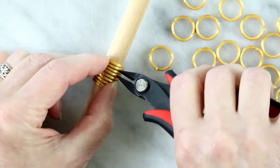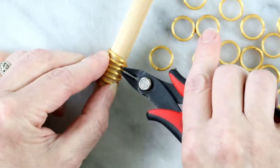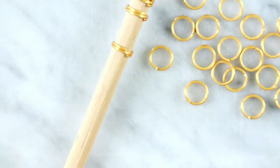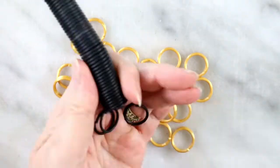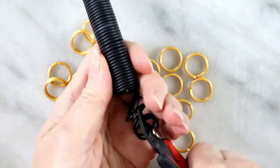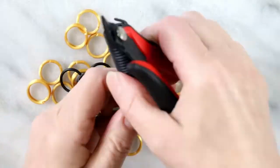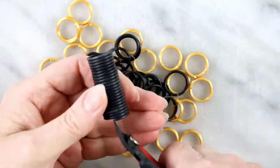Traditionally you make chain mail just from jump rings. But to make my life easier, I like to use a combination of jump rings and split rings. Because that way I can get away with sealing just half of them. I will show you what I mean in a minute.